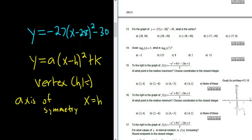So to figure out the vertex, it's really easy. Just match the formula. So it's 28, and then k is negative 30. If you match it, you get (28, -30).